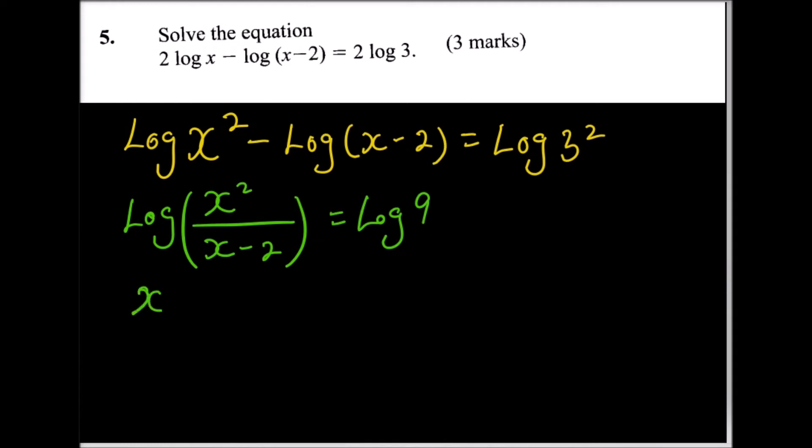You cross multiply and you'll be able to get x² equals 9x minus 18. So with that, now we can